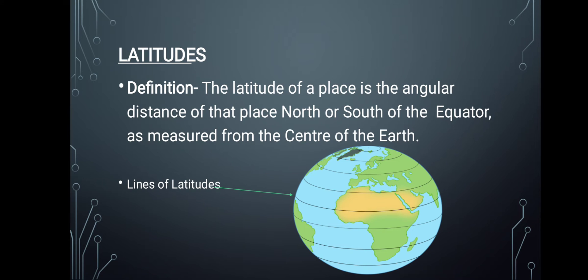Now let's discuss the definition of latitude. The latitude of a place is the angular distance of that place north or south of the equator, as measured from the center of the earth. The equator is at zero degrees and is a horizontal line.